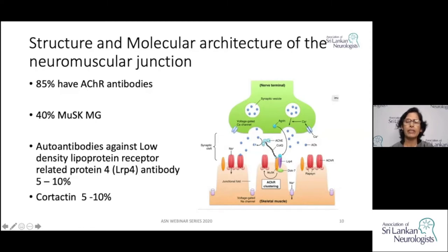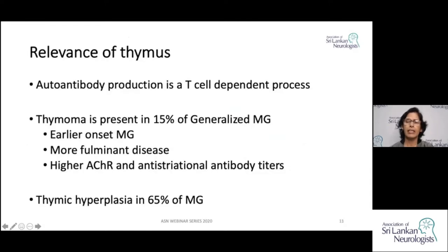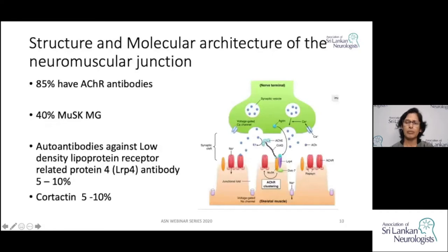There are other receptors that are important: the nerve terminal-generated agrin, when released, acts on the LRP4 receptor — low density lipoprotein-related receptor protein 4. Together with the MuSK receptor, they keep acetylcholine receptors concentrated in the neuromuscular junction. It is a fairly complex mechanism.